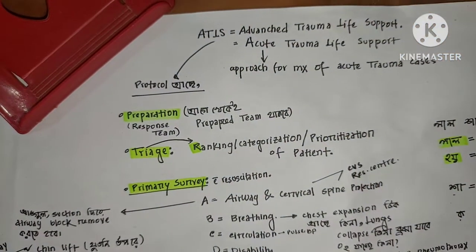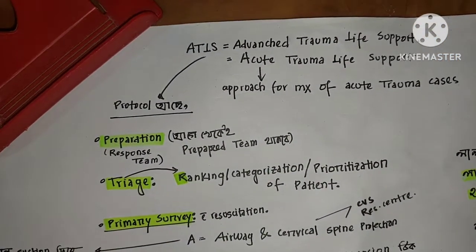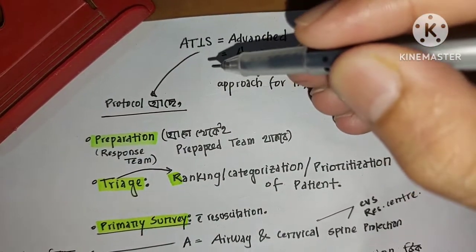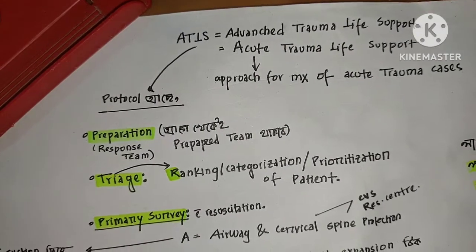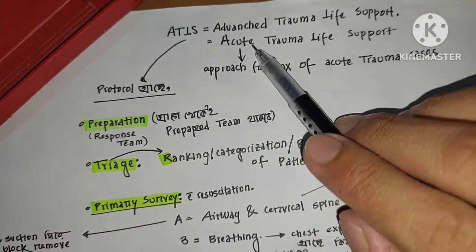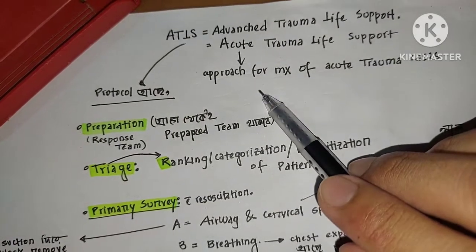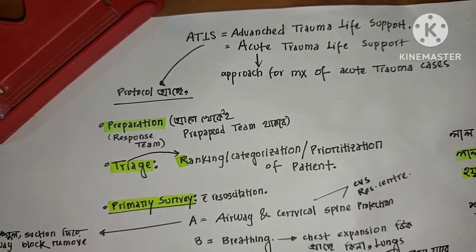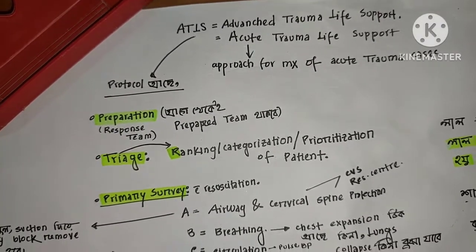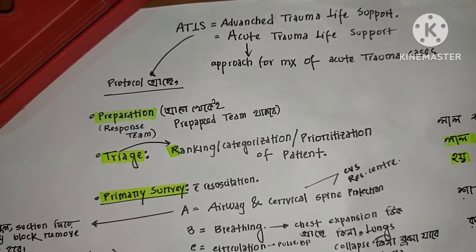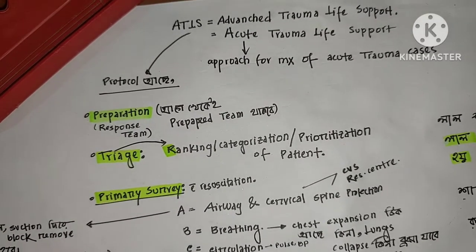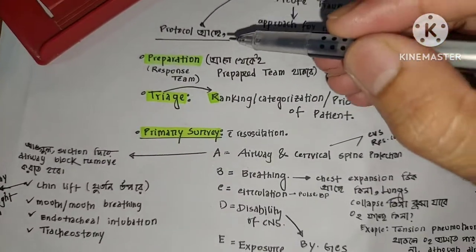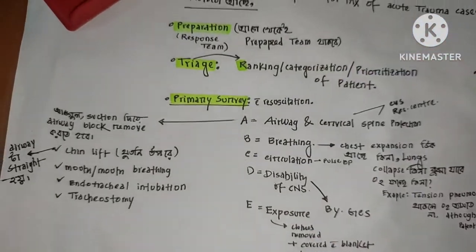ATLS is a patient approach for acute trauma. If there is an acute trauma, the management of ATLS will be applied in the same way. So if there is an injury, a trauma, or a mass casualty, we will follow the ATLS guideline. ATLS guideline is a protocol that will guide patient treatment.